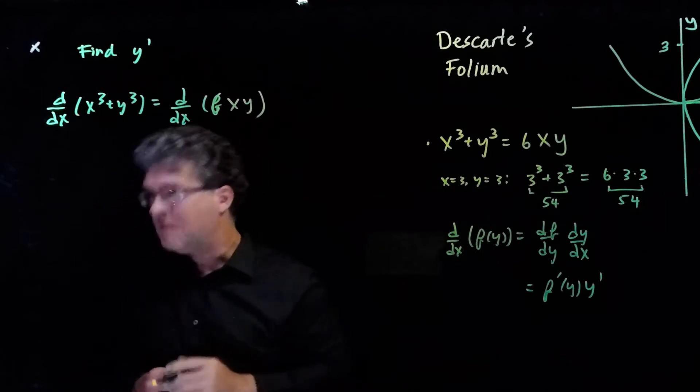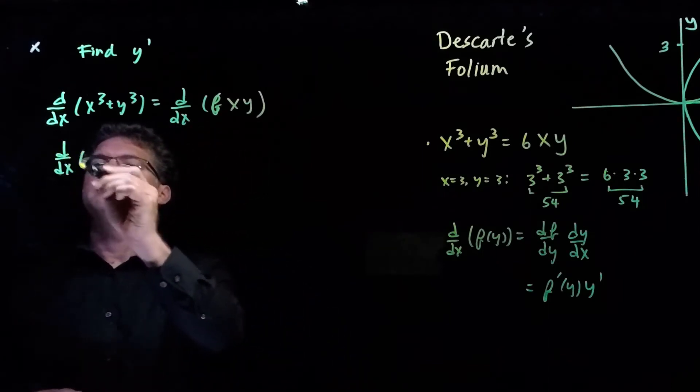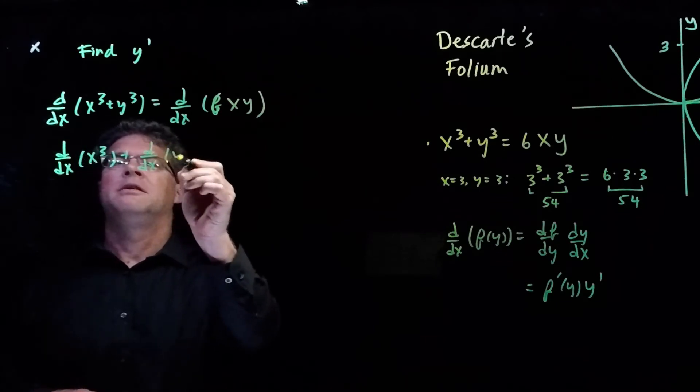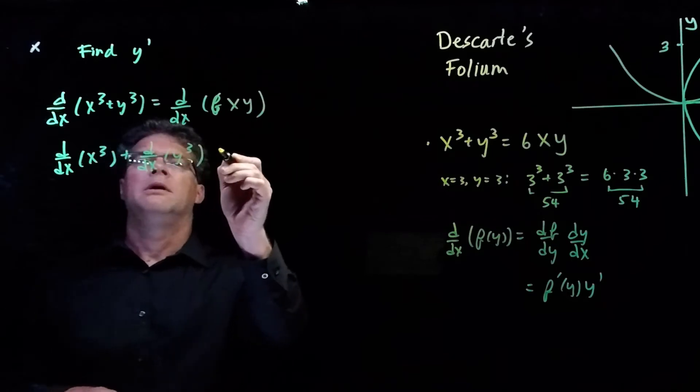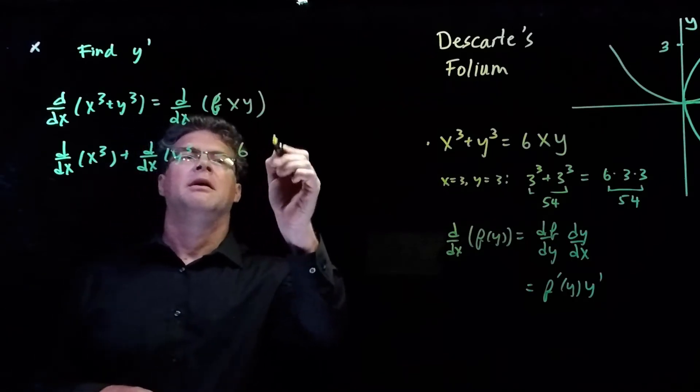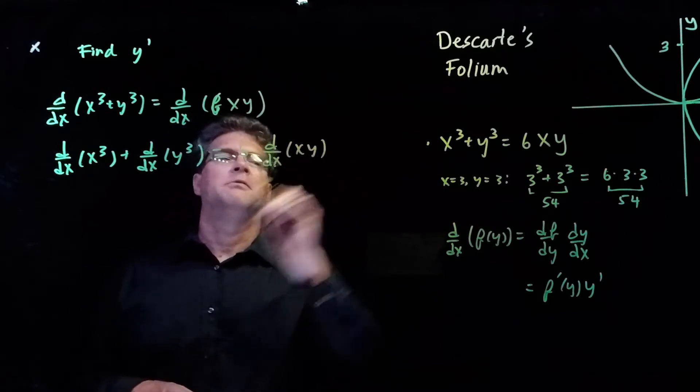Let's look at the left-hand side. We can break this into the derivative with respect to x of x cubed, plus the derivative with respect to x of y cubed. And then we can pull out the 6, and we have the derivative with respect to x of x times y.